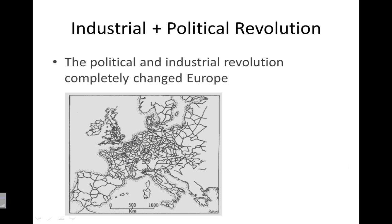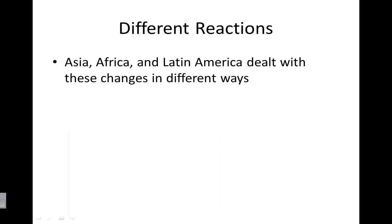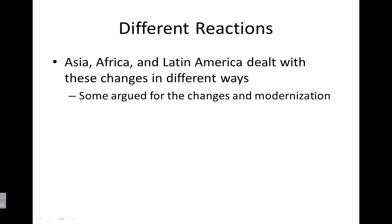When you combine the Industrial and Political Revolution, these completely changed Europe — massive changes. And also the rest of the world: Asia, Africa, and Latin America dealt with these changes in different ways. Some argued for modernization and wanted those changes, but others tried to stick to the traditional ways that they knew.